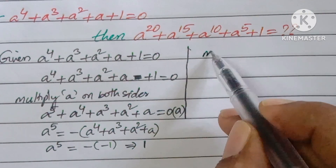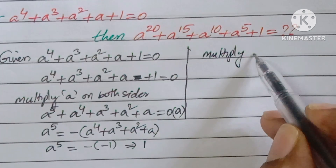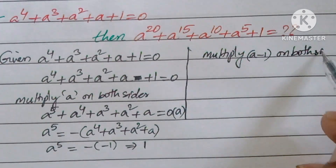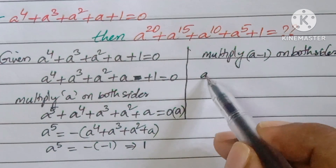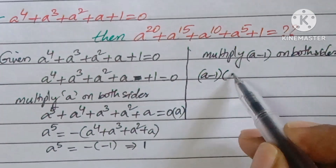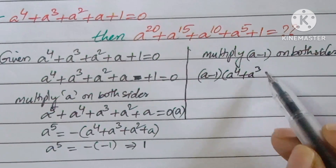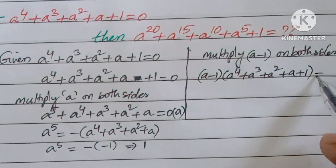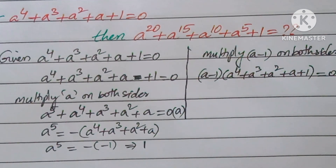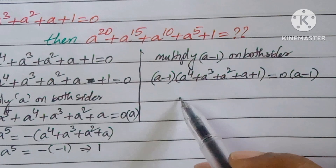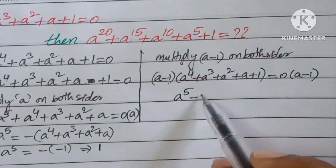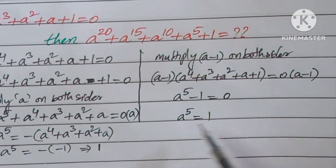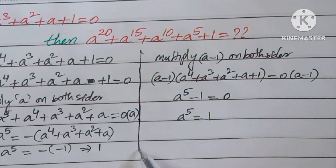The other way is to multiply a minus 1 on both sides. So, a minus 1 into a power 4 plus a cube plus a square plus a plus 1 is equal to 0 into a minus 1. Here you will get a to the power of 5 minus 1 equal to 0, so a to the power of 5 is equal to 1. This is another way to get the a power 5 value.